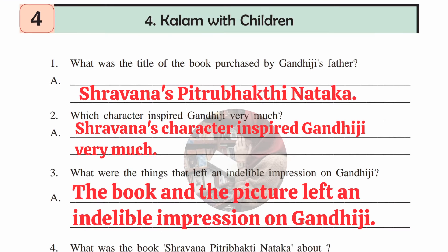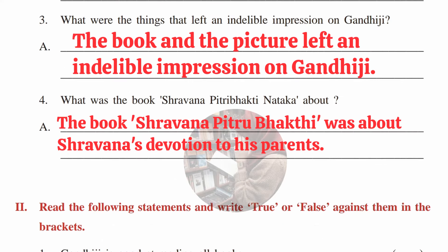Worksheet 4.10 comprehension answers: first — what was the title of the book purchased by Gandhi's father? Answer: Shravana Pitru Bhakti Nataka. Second — which character inspired Gandhi Ji very much? Answer: Shravana's character inspired Gandhi Ji. Third — what things left an indelible impression on Gandhi Ji? Answer: the book and the picture left an indelible impression on Gandhi Ji.